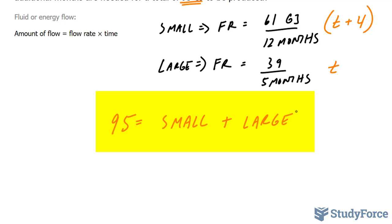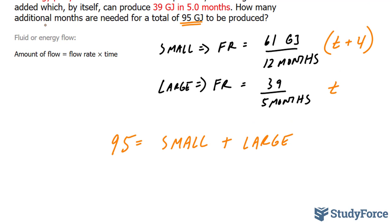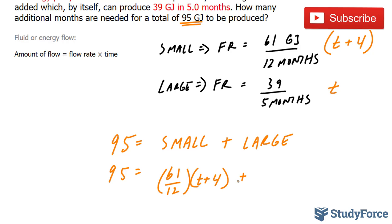By solving an equation like this, we will end up with t, and that will give us the answer to the additional months that are needed. So 95 is equal to 61 over 12 times t plus 4 months, plus 39 over 5 times t.